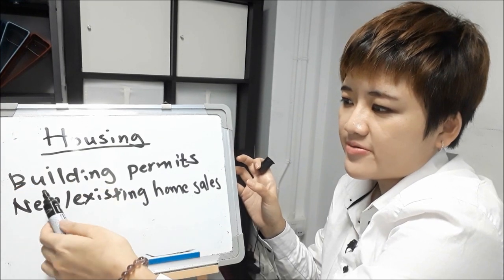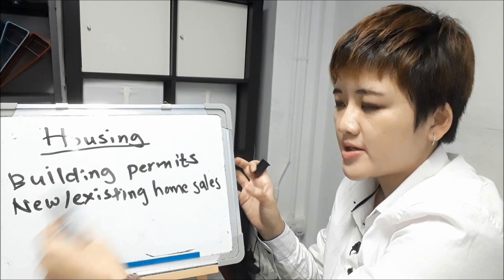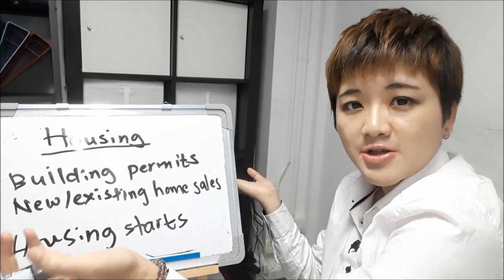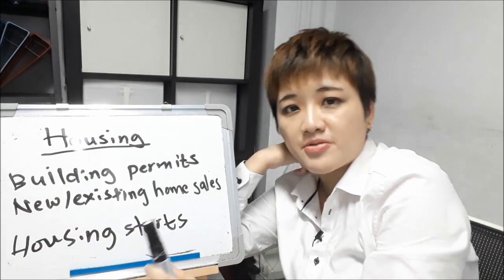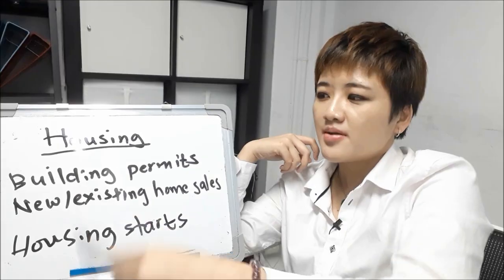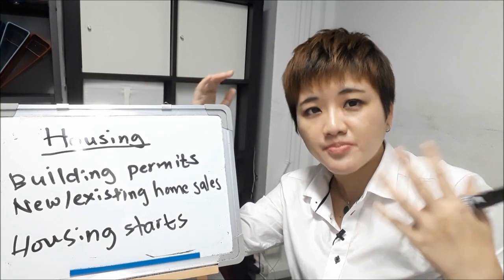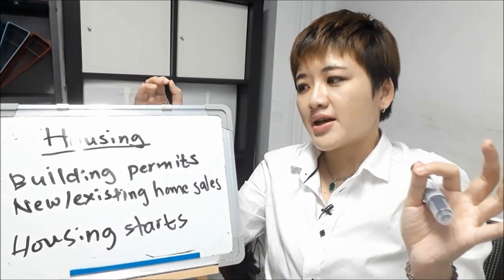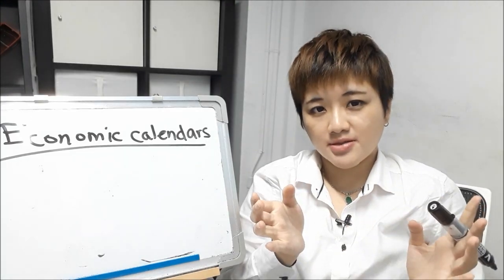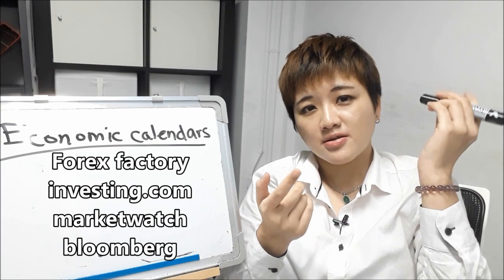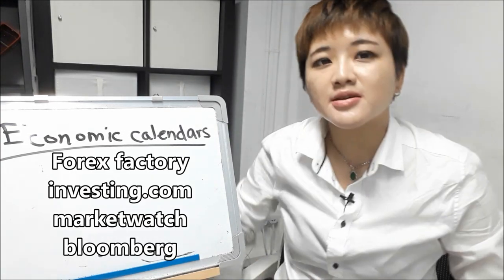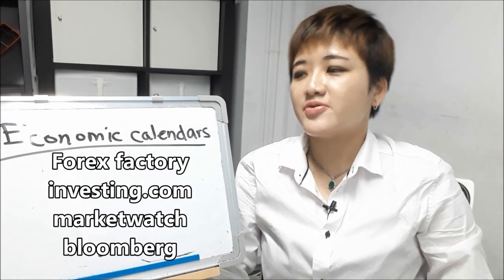For housing indicators, you have building permits, new home sales, and existing home sales. Building permits are required before a home is built; this is the more important indicator that can be used to predict what's going to happen in the future. There are many economic calendars you can look at — the popular ones are Forex Factory, Investing.com, MarketWatch, and Bloomberg. A Bloomberg terminal would be better, but if you don't have one, you can still rely on these free calendars.